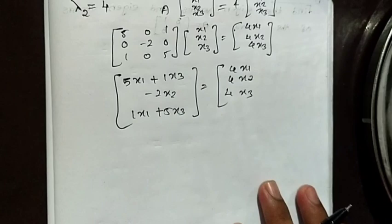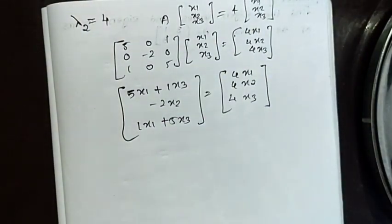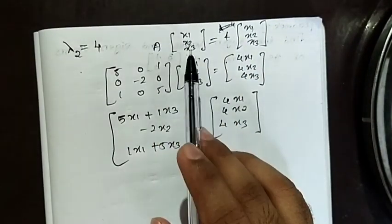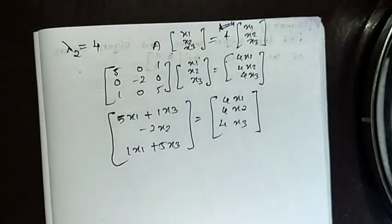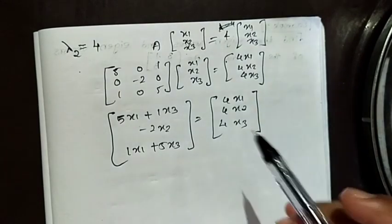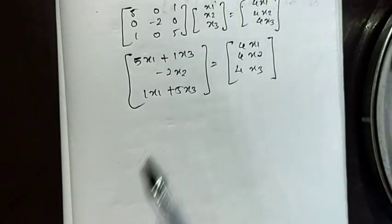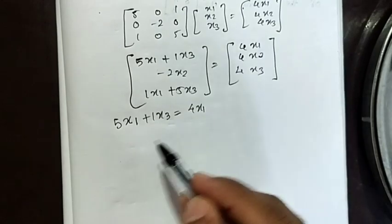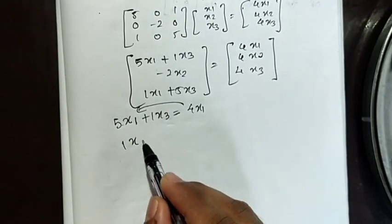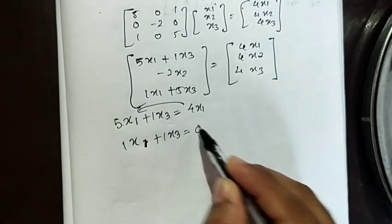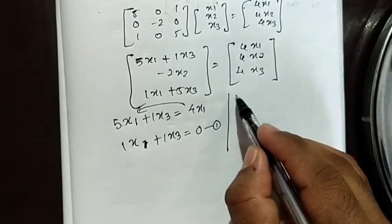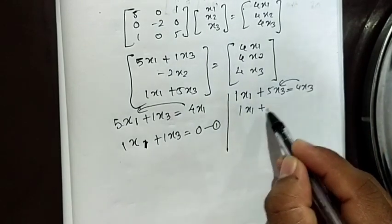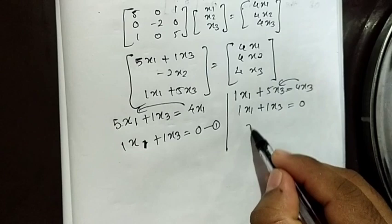For lambda equal to 4, we substitute into the equations. We get 5x1 plus 1x3 equal to 4x1, which gives 1x1 plus x3 equal to 0. Also, x1 plus 5x3 equal to 4x3, giving x1 equal to x3. So x1 equals x3, and x3 is a free variable.